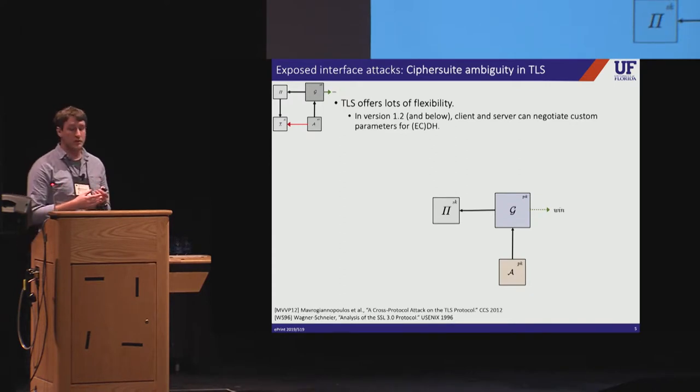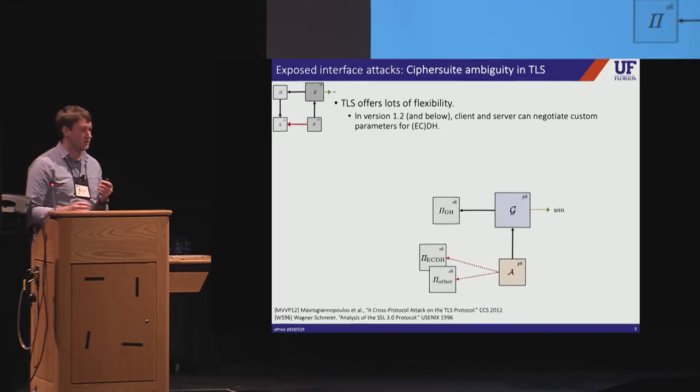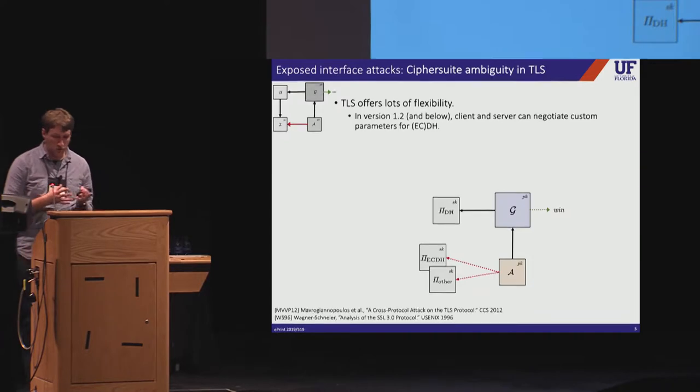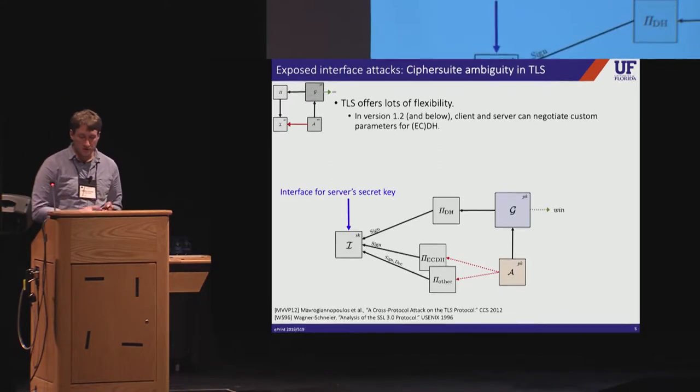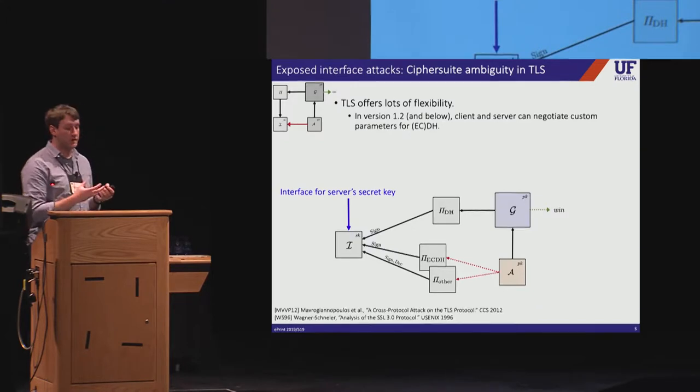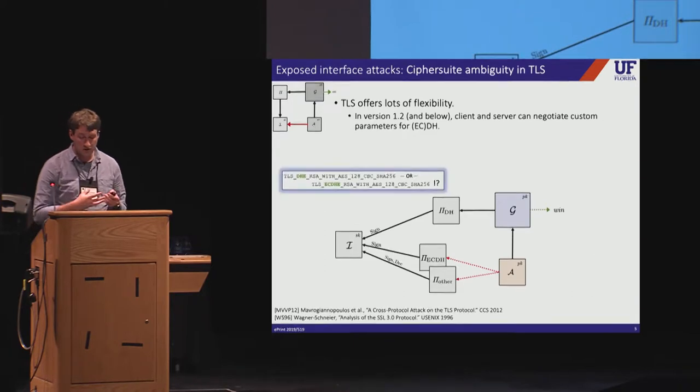So our second example of an exposed interface attack involves TLS. So in version 1.2 and below, it's possible to negotiate custom parameters for both classic Diffie-Hellman and elliptic-curved Diffie-Hellman key exchanges. Which mode will be negotiated and which parameters will be used depends on how the client and server are configured. Different configurations lead to different protocol variants, all of which might use the same long-term secrets. So let's explicitly model the interface that exposes the server's secret key for use in TLS. So the key is used for signing in some variants and decryption in others. But the protocol variants we're interested in both use signing for authentication.